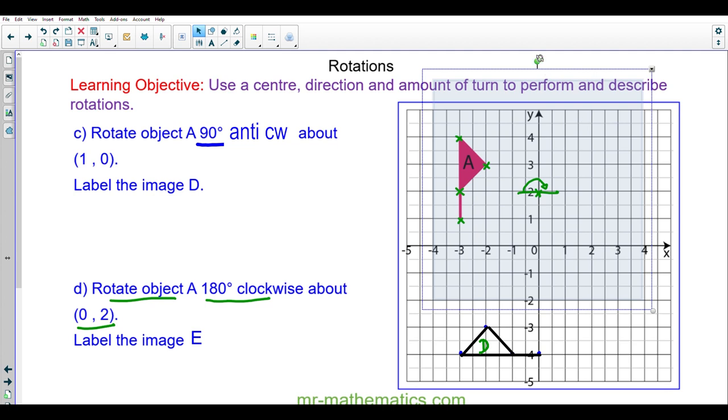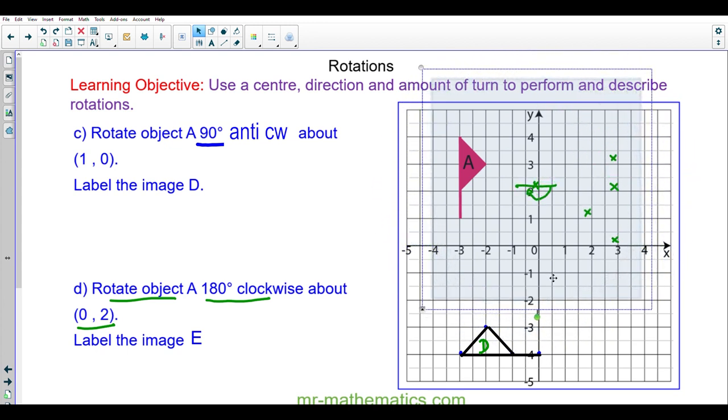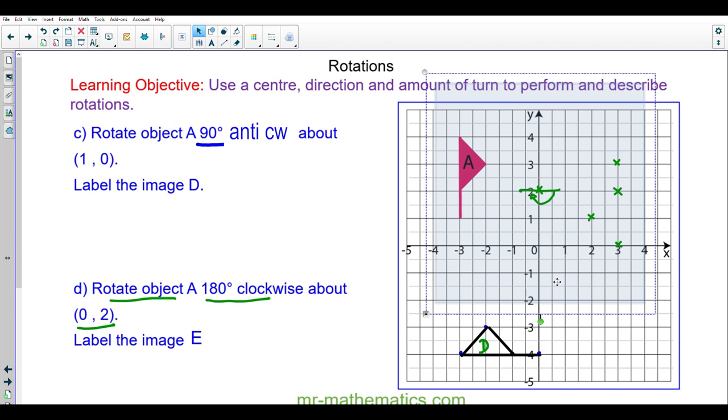And now I will take the tracing paper about the center. And I can recreate the object into the final image. Which I'm going to label E.